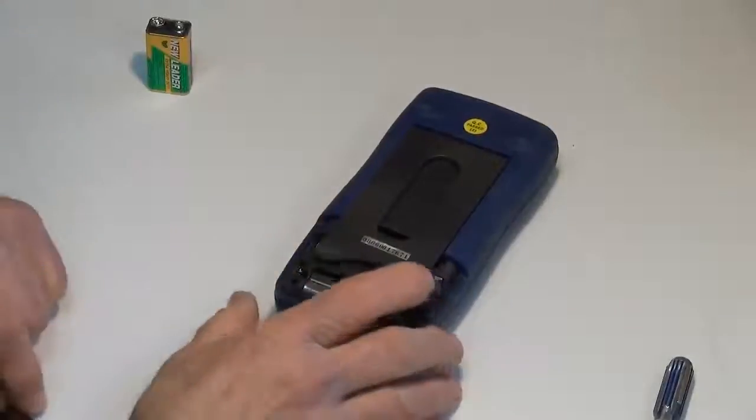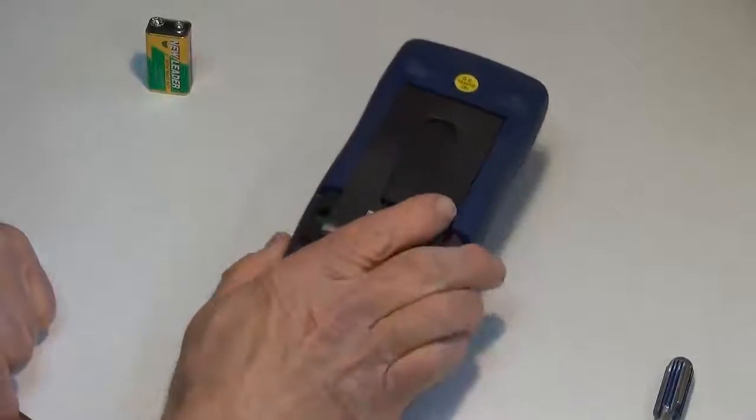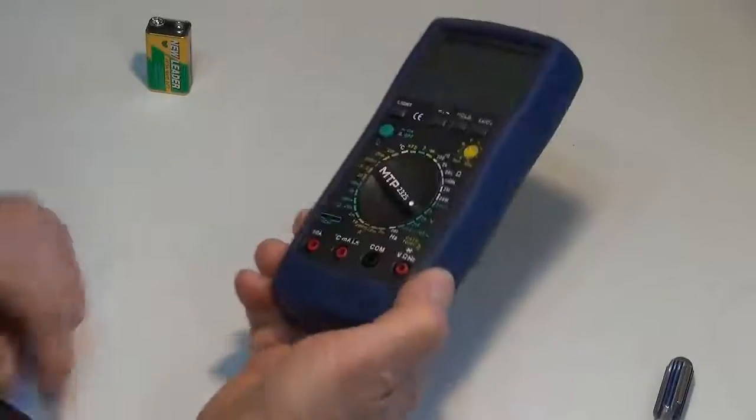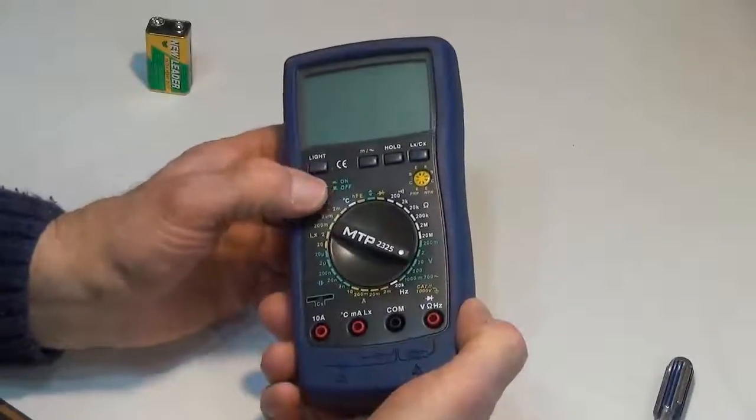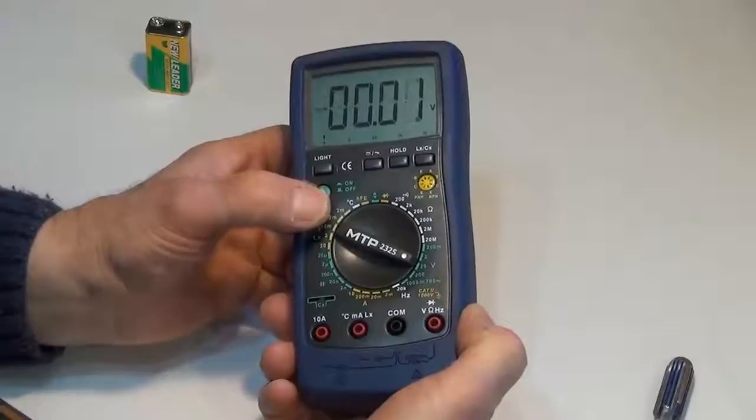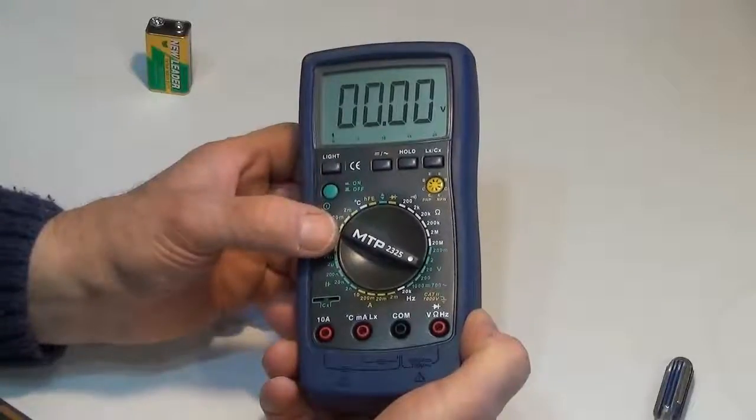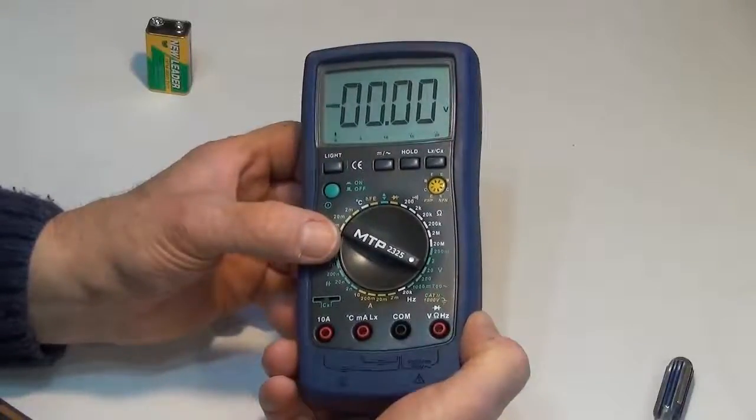Neatly into the back of the multimeter. And before we put the panel back on, let's make sure it's still working. Turn the power switch on. Let's wait a minute. Make sure we don't get a battery alarm.